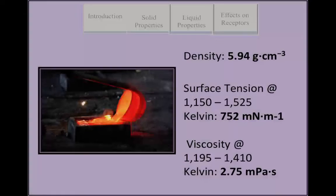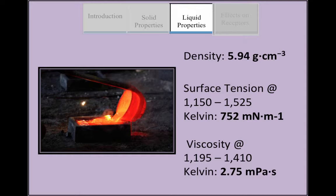This element is mostly obtained from monazite and bastnäsite. It has one of the lower electrical conductivities since it is part of the lanthanide series.